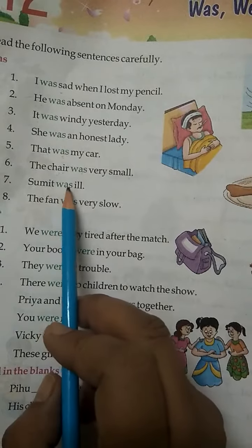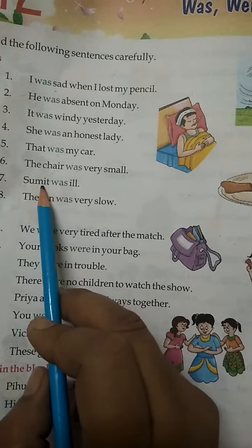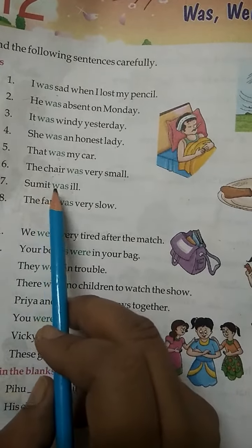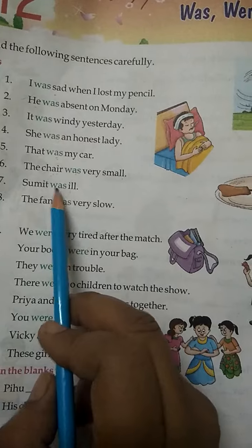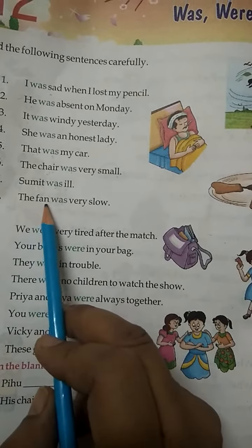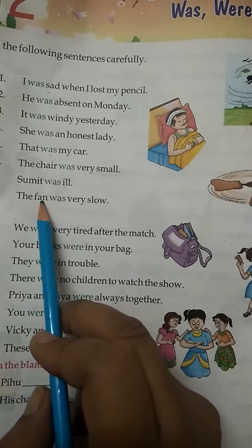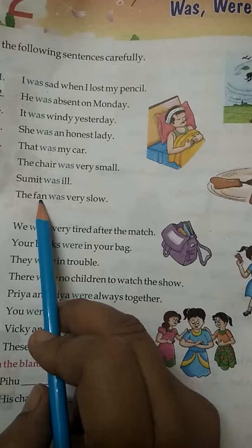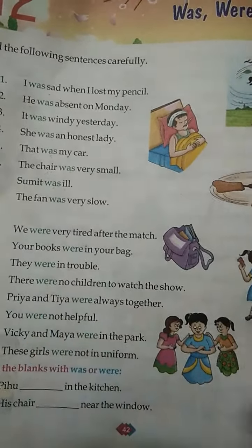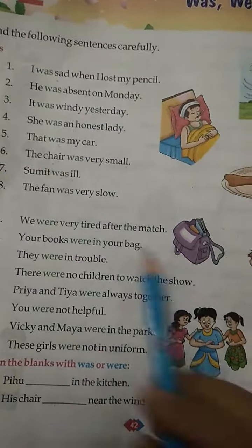Sumit was ill — only one boy is being talked about, so was is used. The fan dash very slow — fan has no 's', it is singular, so was is used. Now look at the were examples.